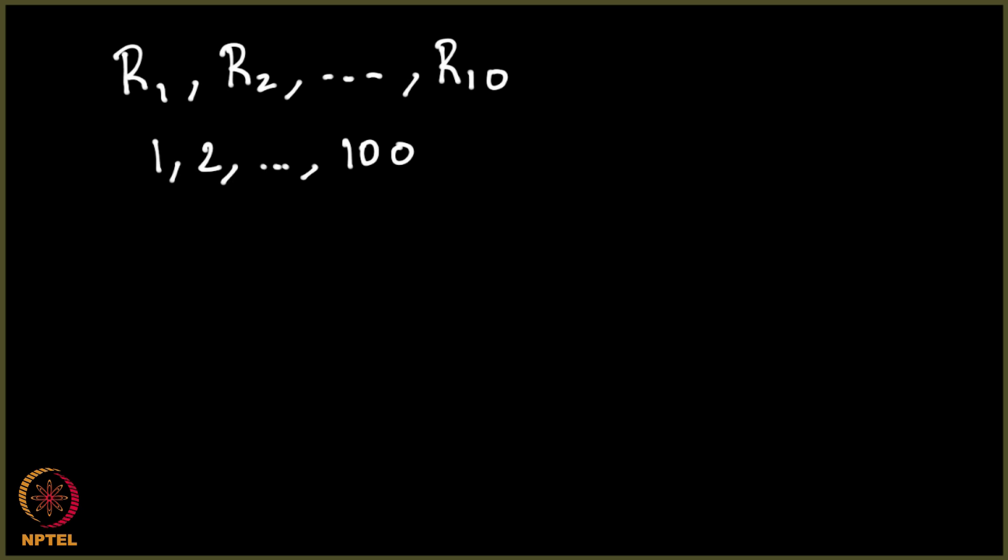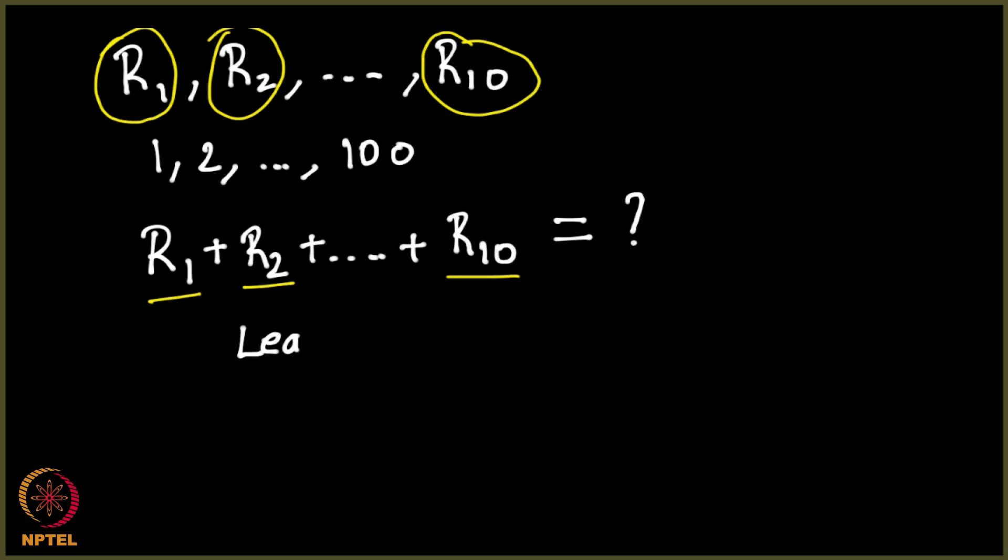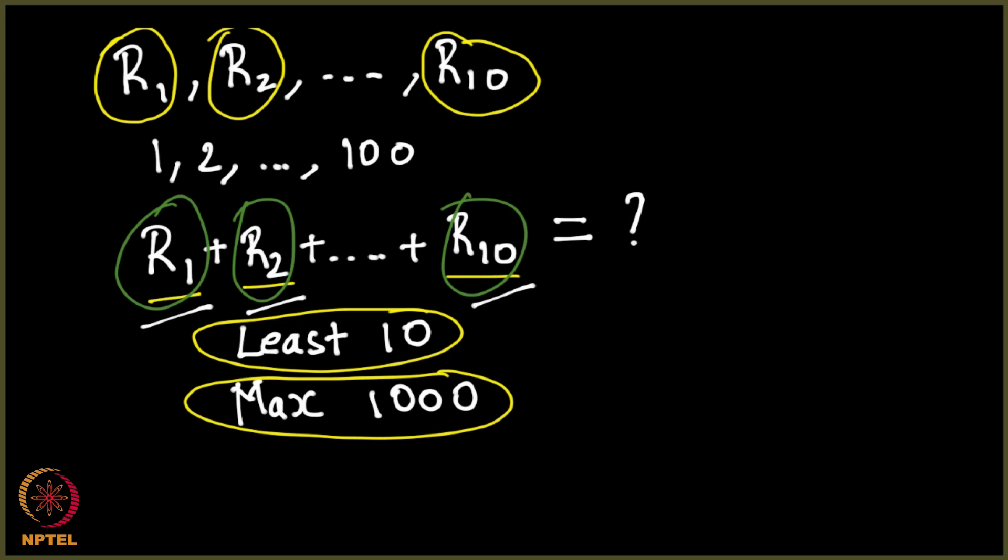Here is an important question, while each of these random numbers can be anything from 1 to 100, just in case I added them, look at this, just in case I added all these, what will this be? See each one of these can be a number from 1 to 100, which means the sum will be at the least, at the least it will be 1 plus 1 plus 1 10 times, assume all of them chose a 1 each, then at least it will be 10 and a maximum of how much, if each one of them picked 100, it will be 100, 100, 100, 10 times, it will be 1000. This is the least and this is the maximum, the minimum and the maximum.